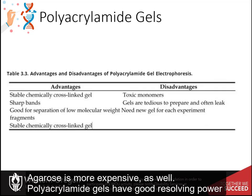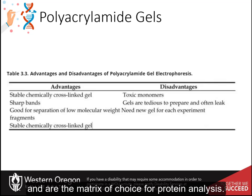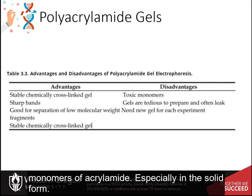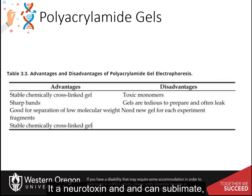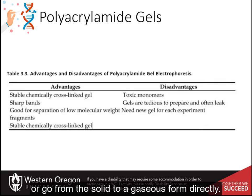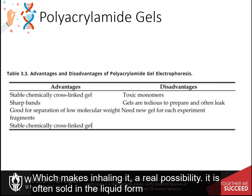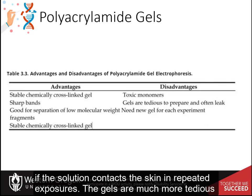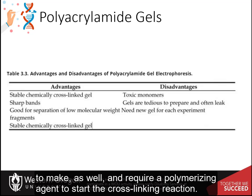Polyacrylamide gels have good resolving power and are the matrix of choice for protein analysis. They form a stable cross-linked matrix. Care must be taken when using the unpolymerized monomers of acrylamide, especially in the solid form. It is a neurotoxin and can sublimate — going directly from a solid to a gaseous form — which makes inhaling it a real possibility. It is often sold in liquid form to help avoid toxicity, although it can still cause loss of peripheral neuron function if the solution contacts the skin in repeated exposures. The gels are also more tedious to make and require a polymerizing agent to start the cross-linking reaction.